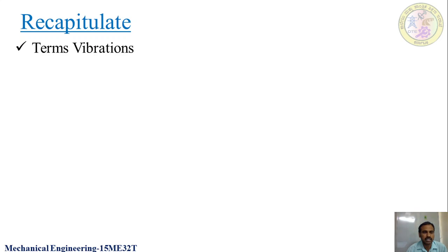The next important term is resonance. Resonance is when the applied frequency is equal to the natural frequency, then the system is said to be under the resonance condition. And we also discussed amplitude. Amplitude is the maximum displacement of the body from the equilibrium or mean position, stated as the amplitude.